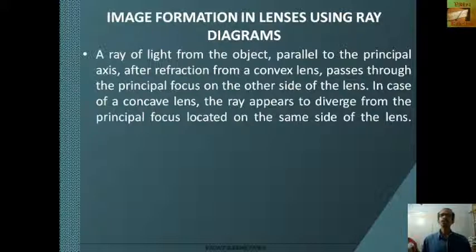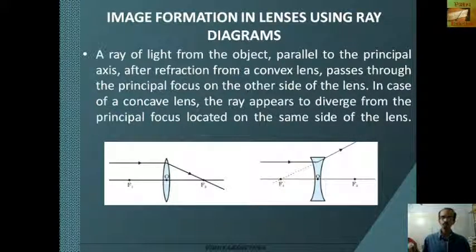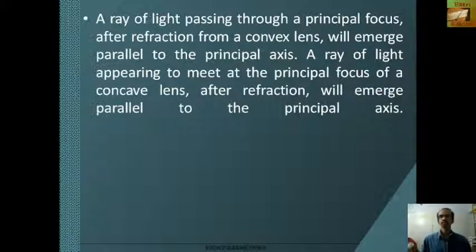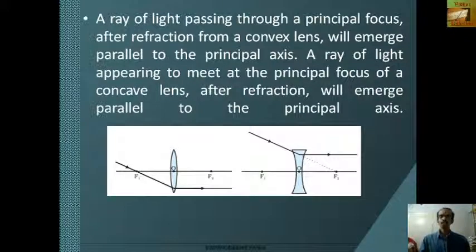In case of a concave lens, the ray appears to diverge from the principal focus located on the same side of the lens, as shown in this figure. The second point is: a ray of light passing through a principal focus, after refraction from a convex lens, will emerge parallel to the principal axis. A ray of light appearing to meet at the principal focus of a concave lens after refraction will also emerge parallel to the principal axis.